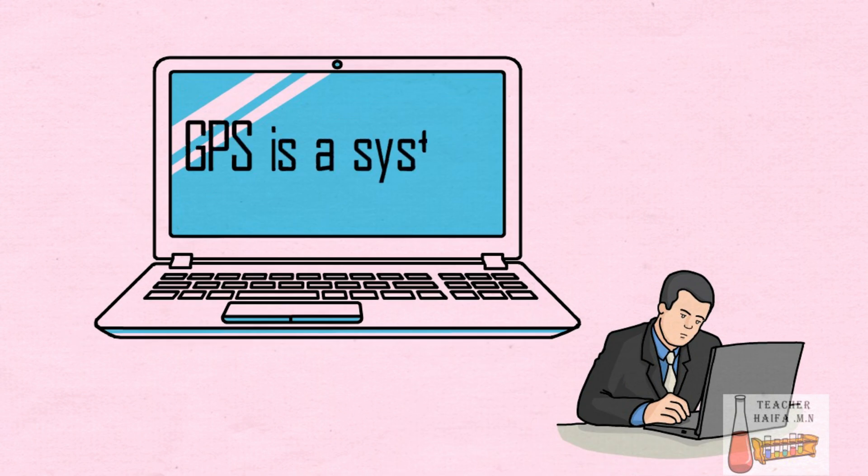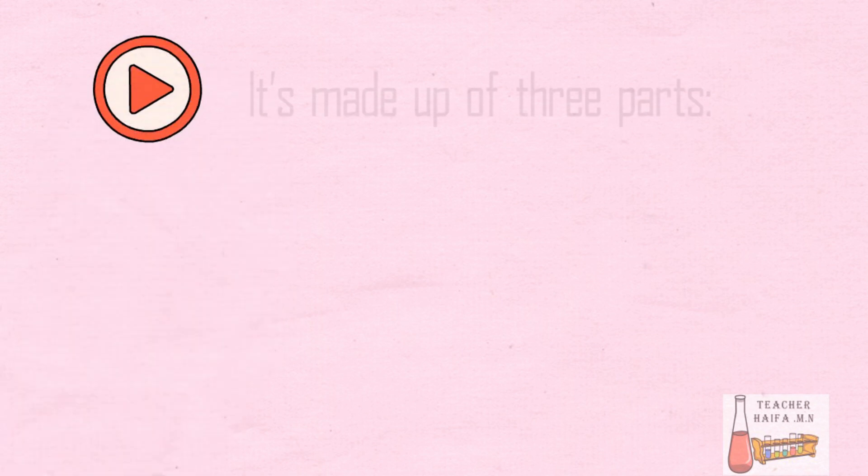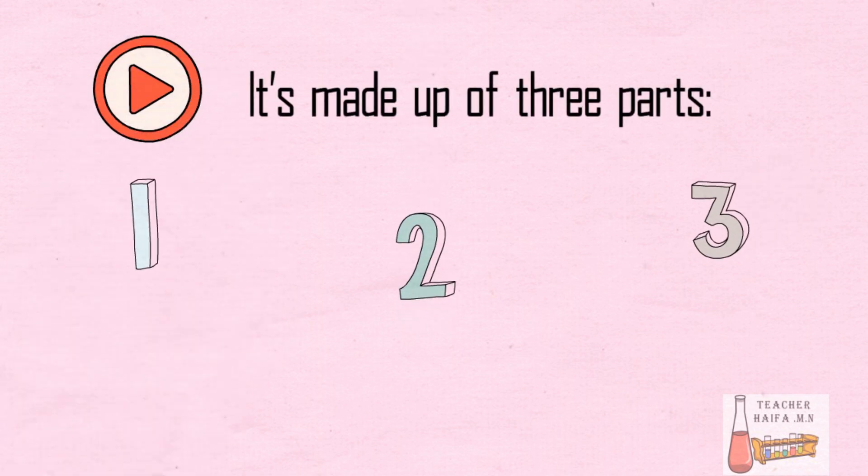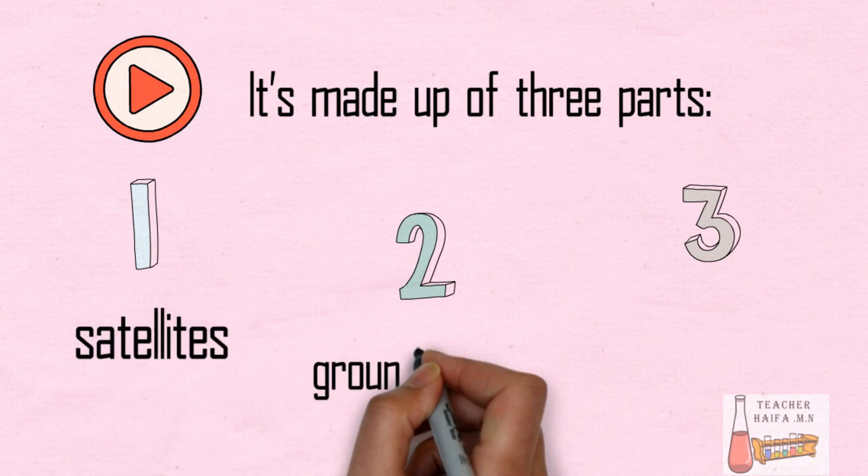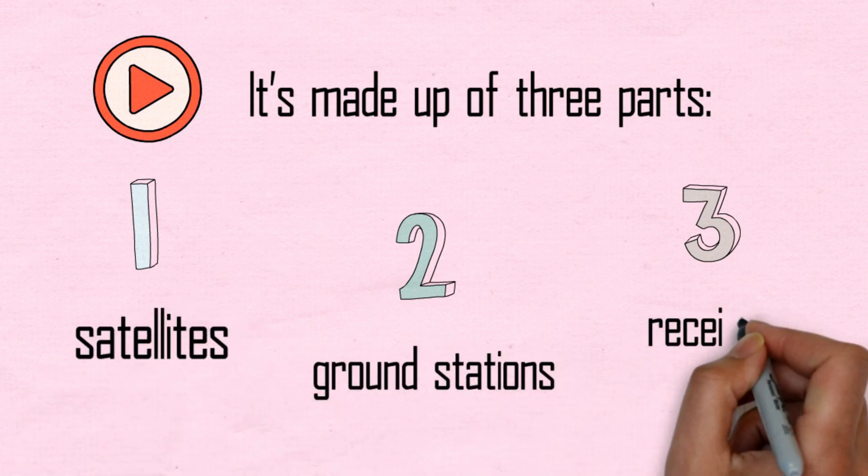GPS is a system. It's made up of three parts: satellites, ground stations, and receivers.